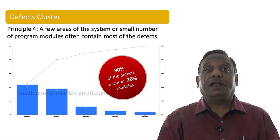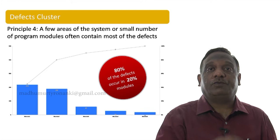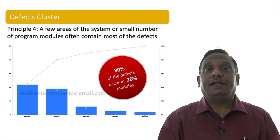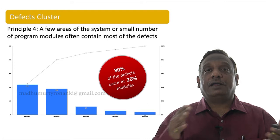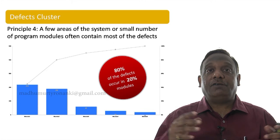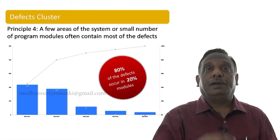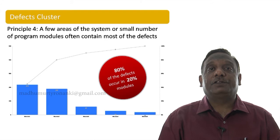That is why we say: the more defects you find, the more defects there are. Keep this internalized — defects in software tend to occur in clusters; they don't occur uniformly. After understanding this principle, you have to determine where you will put most of your testing effort. That's why this is a very important testing principle. Now let's move to the fifth testing principle: the pesticide paradox.